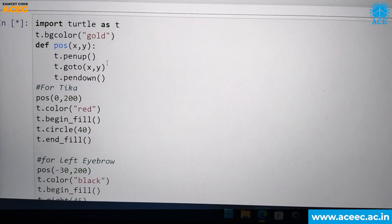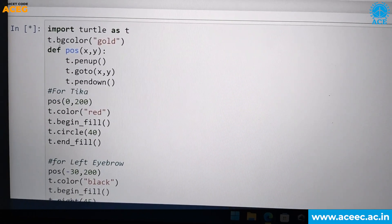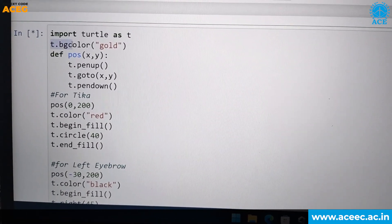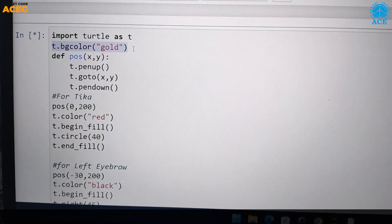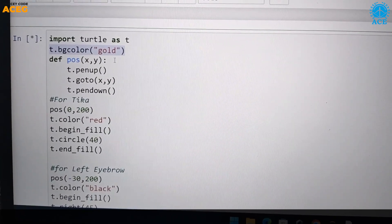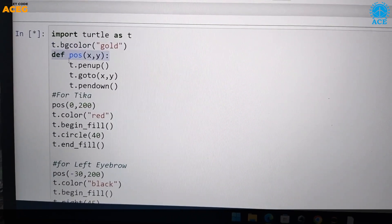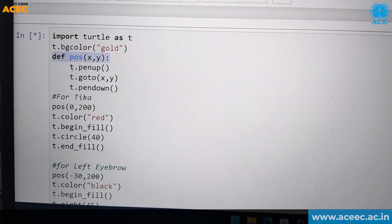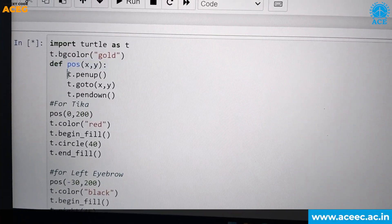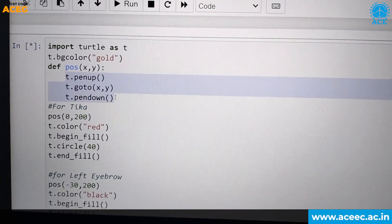So firstly, in the coding part, we use Turtle. For background color, we chose gold, which is very suitable for Goddess Durga Mata. Next we define the position X, Y to draw the lines. We use pen up, pen down, and go to methods.